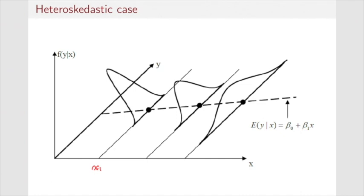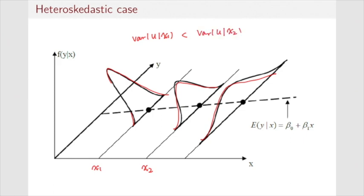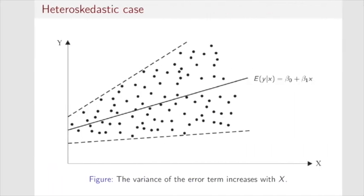In the heteroskedastic case, for some x₁ the distribution of uᵢ is very concentrated, but for some other x₂ the distribution is very dispersed. That means the variance of u conditional on x₁ is smaller than conditional on x₂, which is smaller than conditional on x₃. In other words, the conditional variance changes with x.